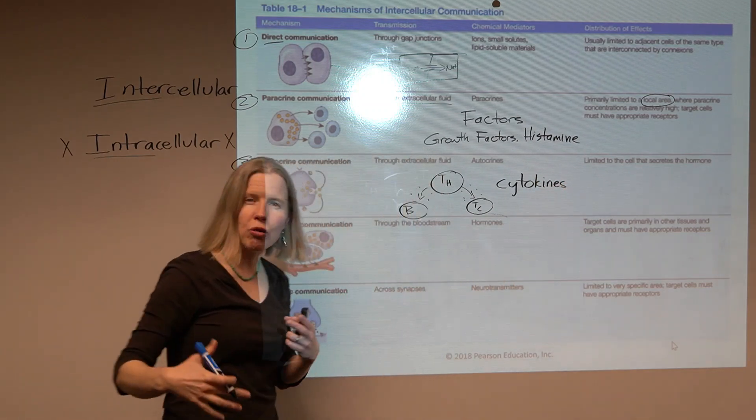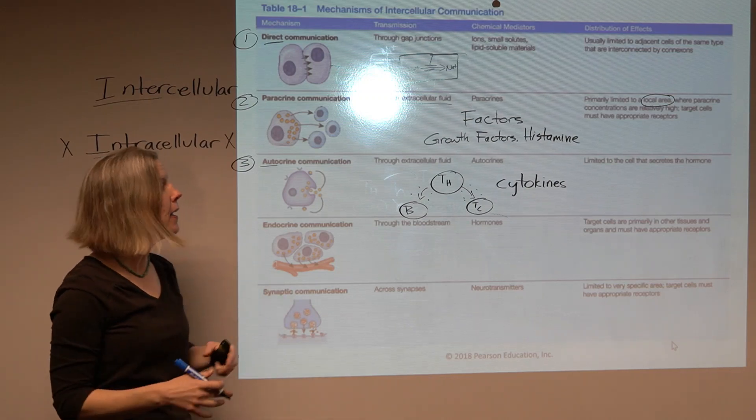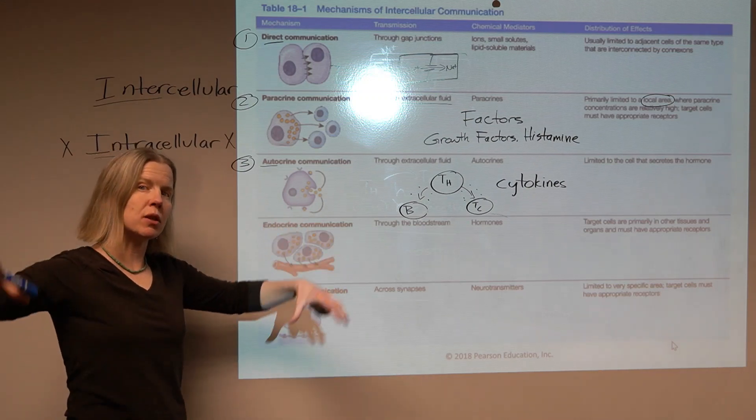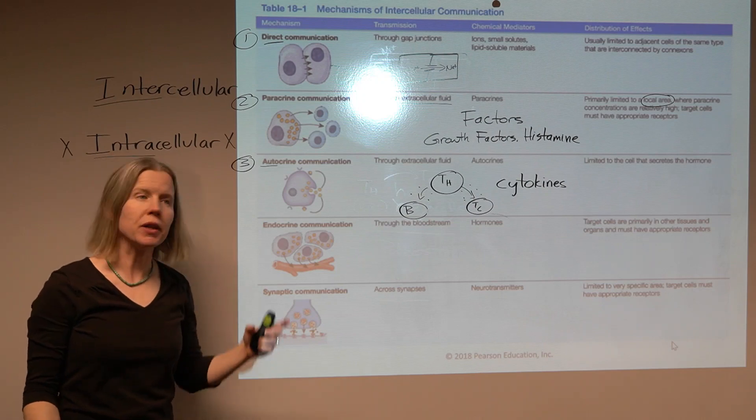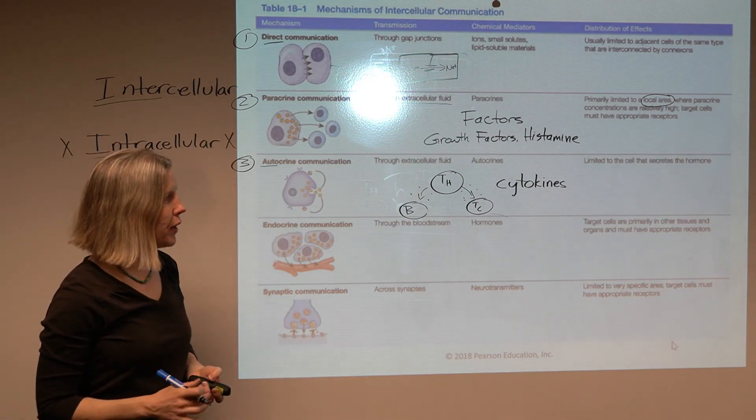Remember that was the big thing in COVID, the cytokine storm, people all of a sudden releasing way too many of these kind of immune system modulating chemicals. That's what we're dealing with. I think that's the best example, probably of autocrine communication.